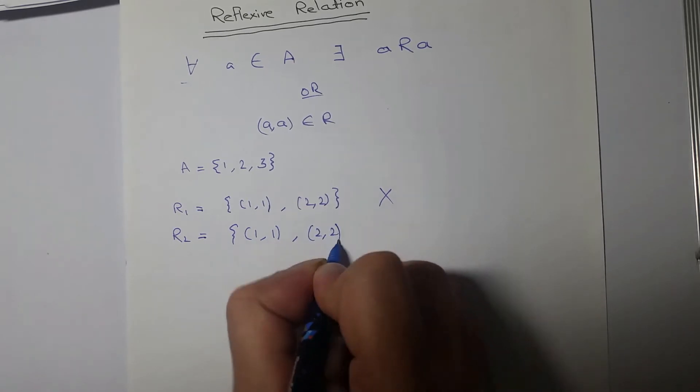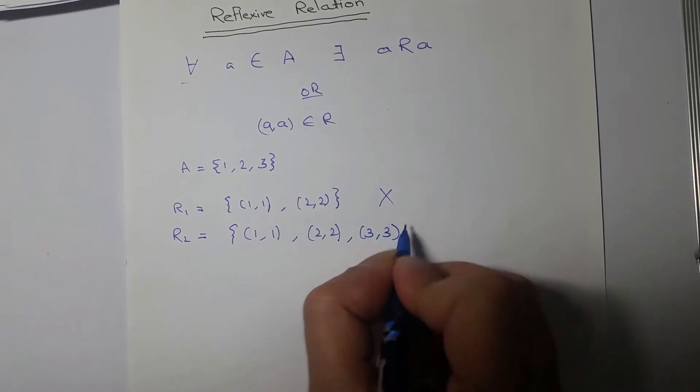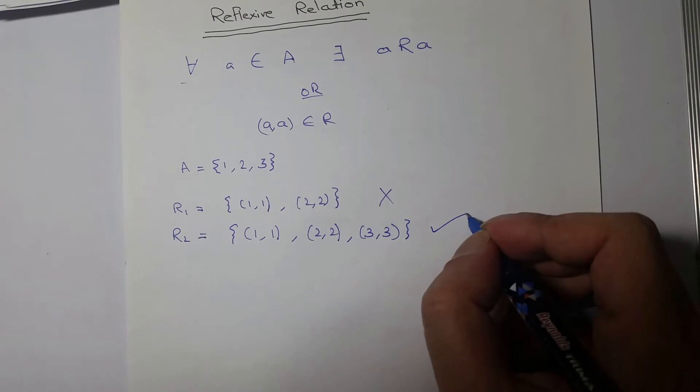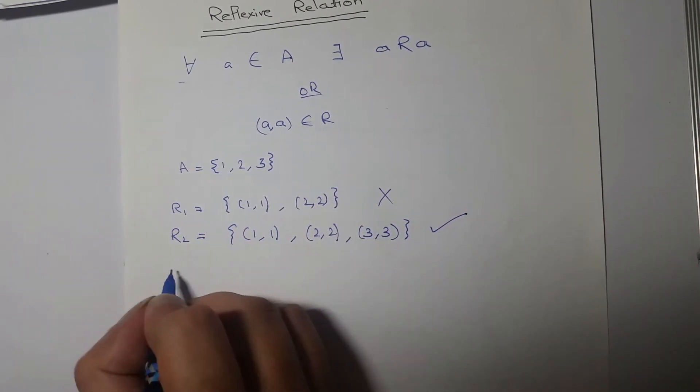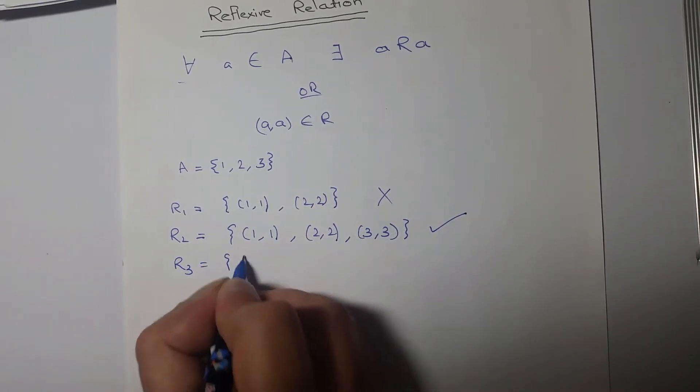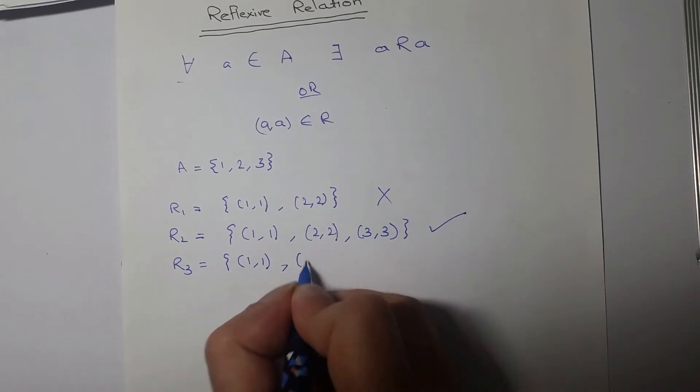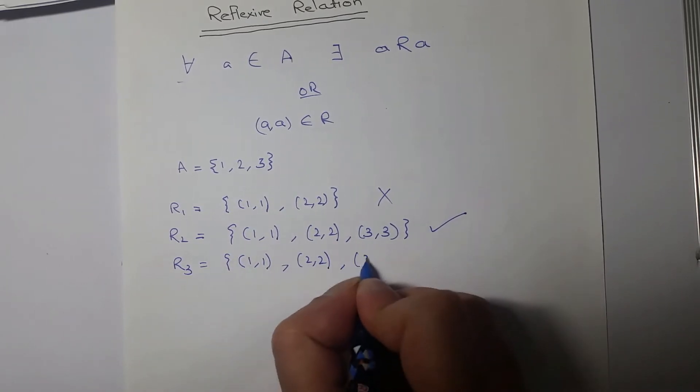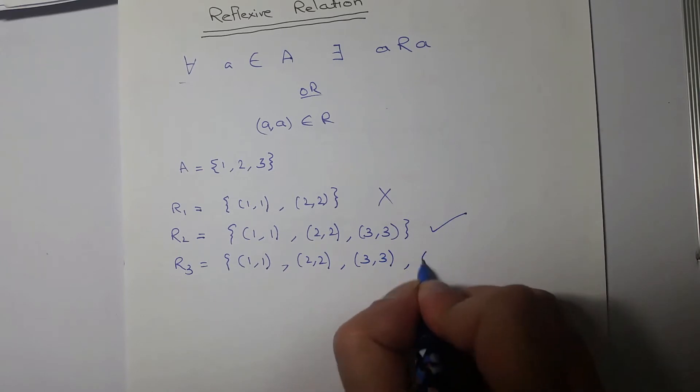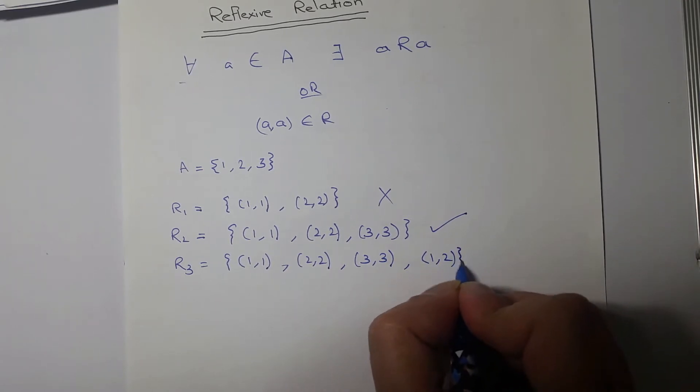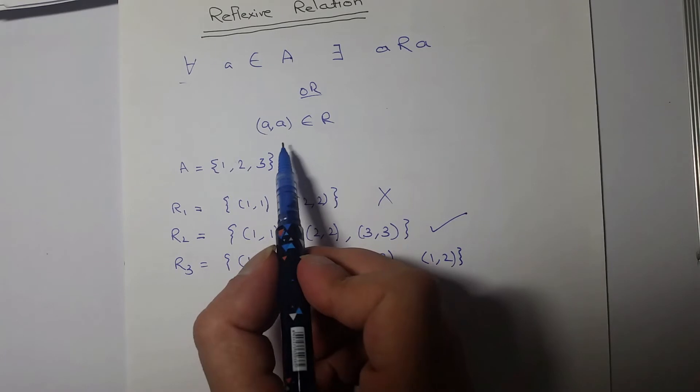Another example, R3 is {(1,1), (2,2), (3,3), (1,2)}. Now the definition states that every element must be related to itself, but does not prevent us to have other ordered pairs.